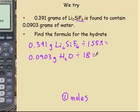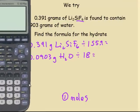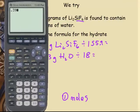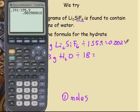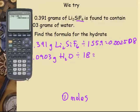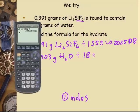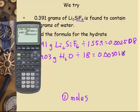Water, 18. From there, that will give us moles. So step one is get moles. I have 0.391 divided by 155.9, and we get 0.00251. I could go 2508 to keep an extra significant digit. Water, I have 0.0903 divided by 18, I get 0.005016. I now have moles of each.